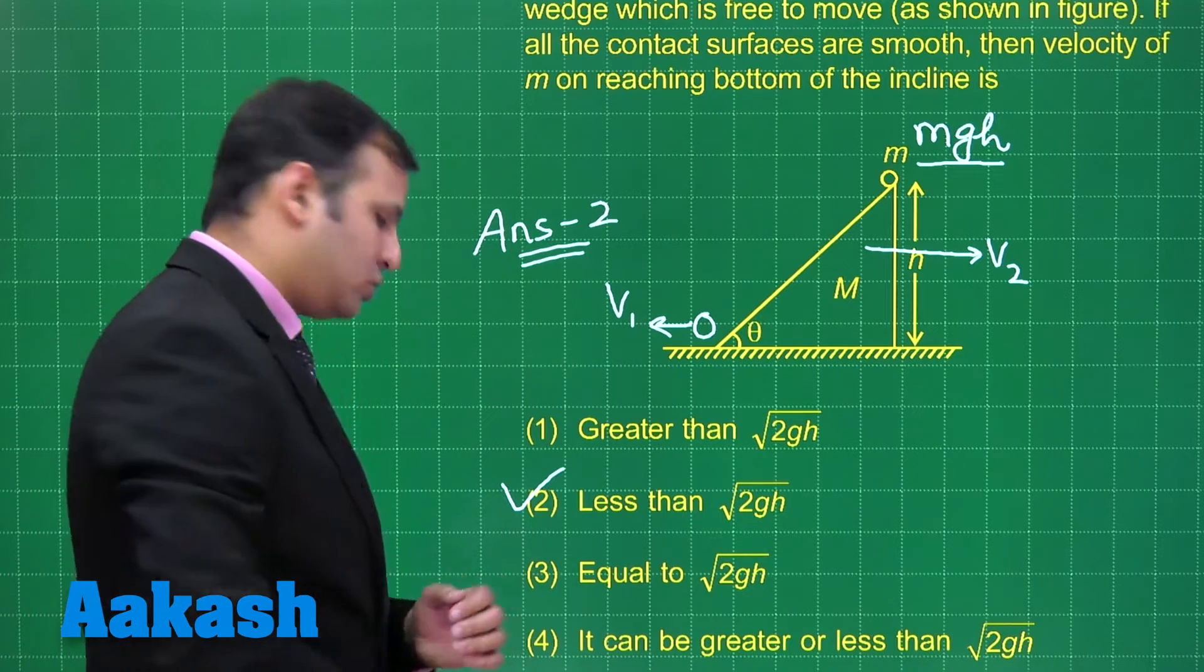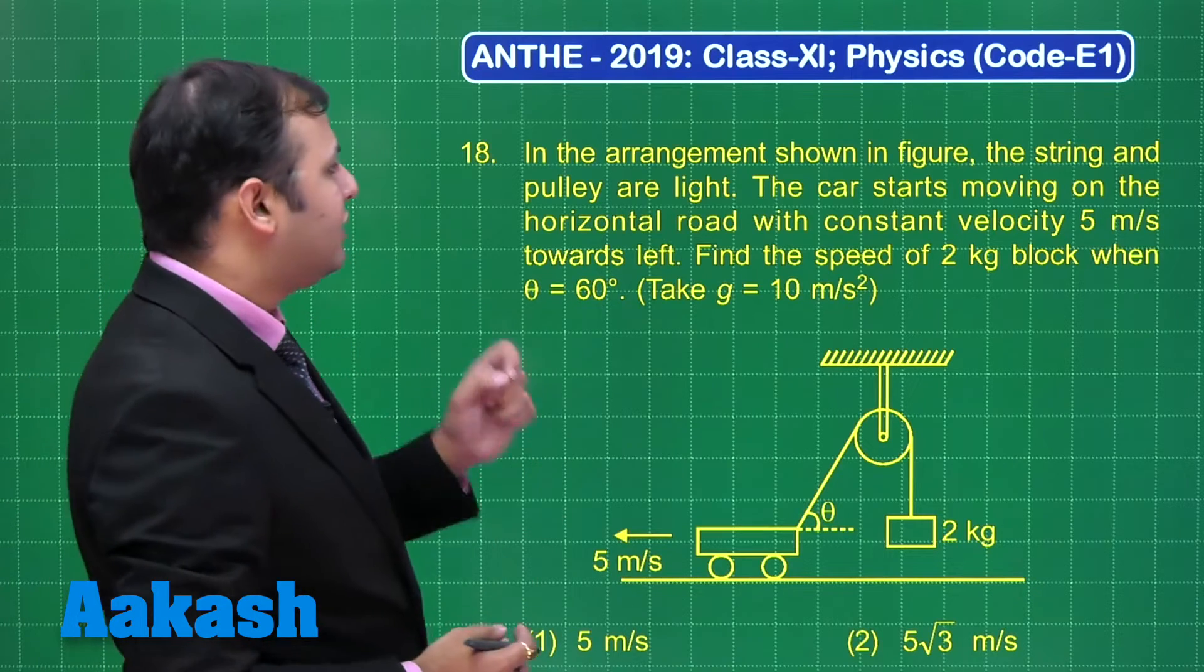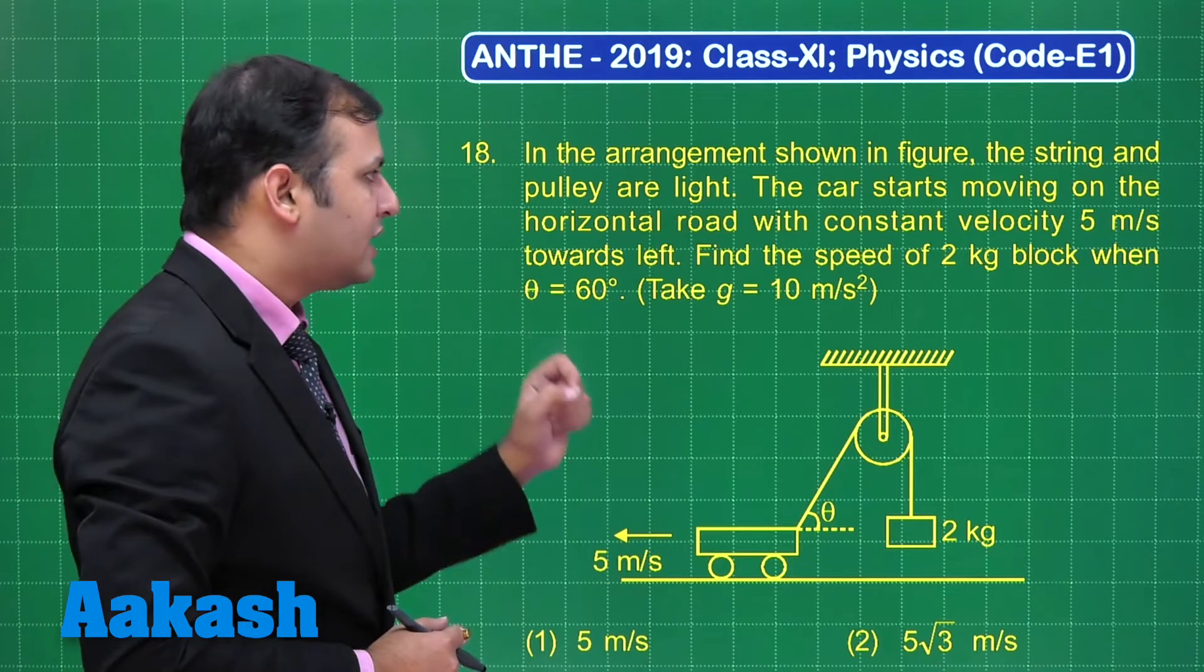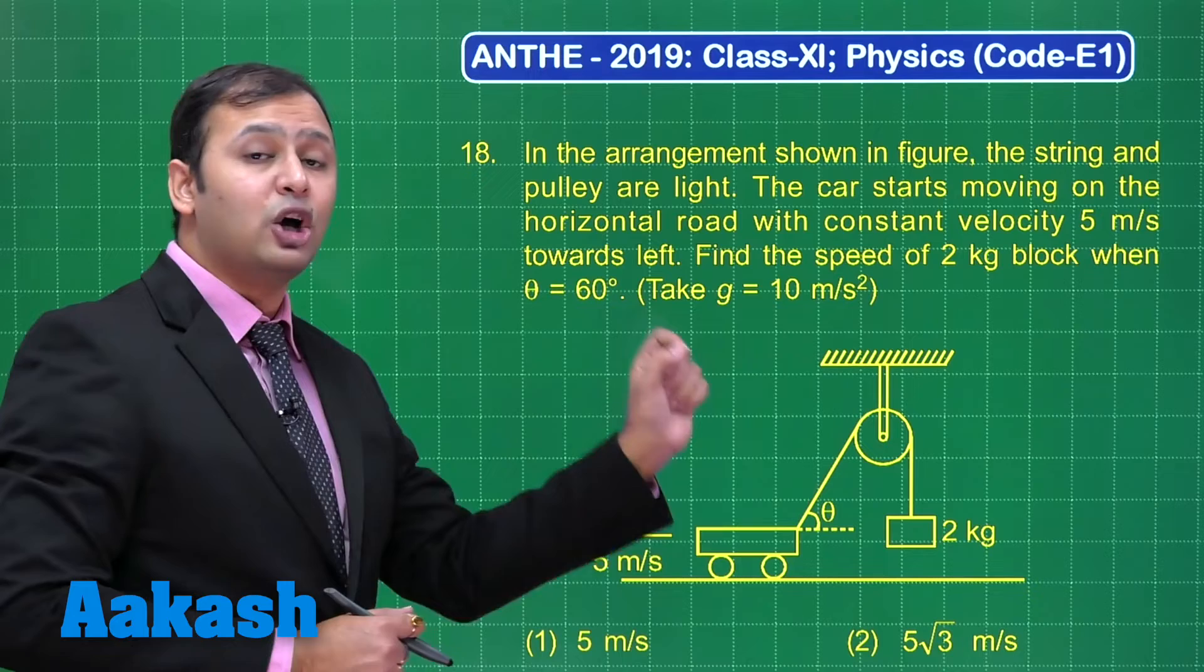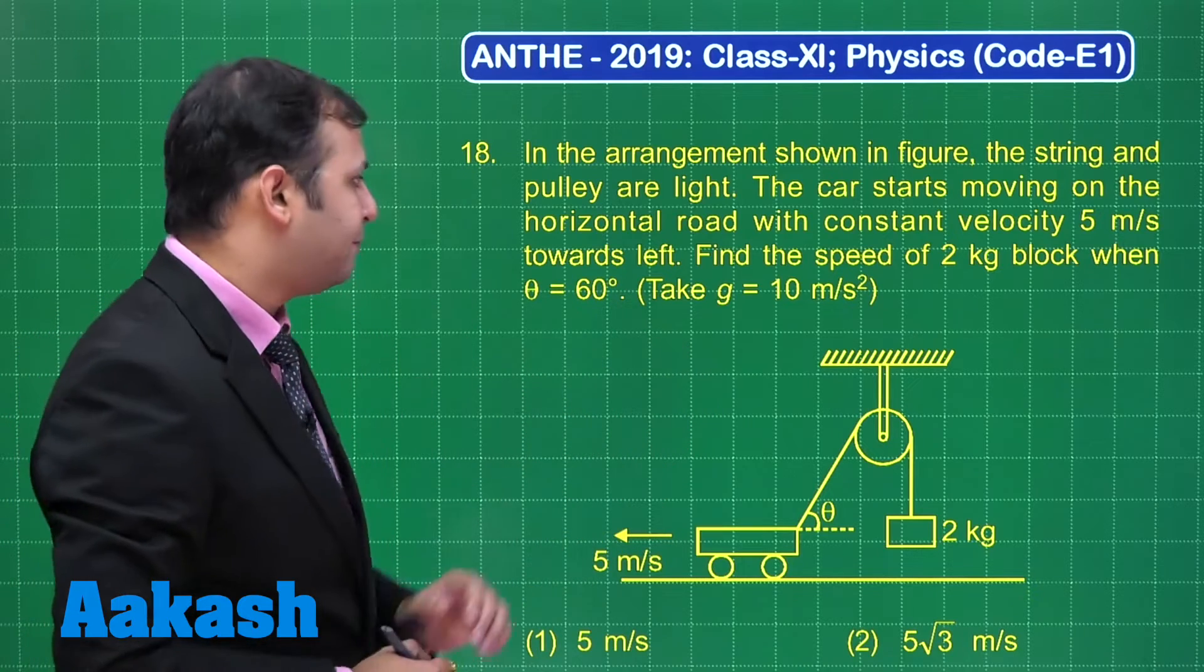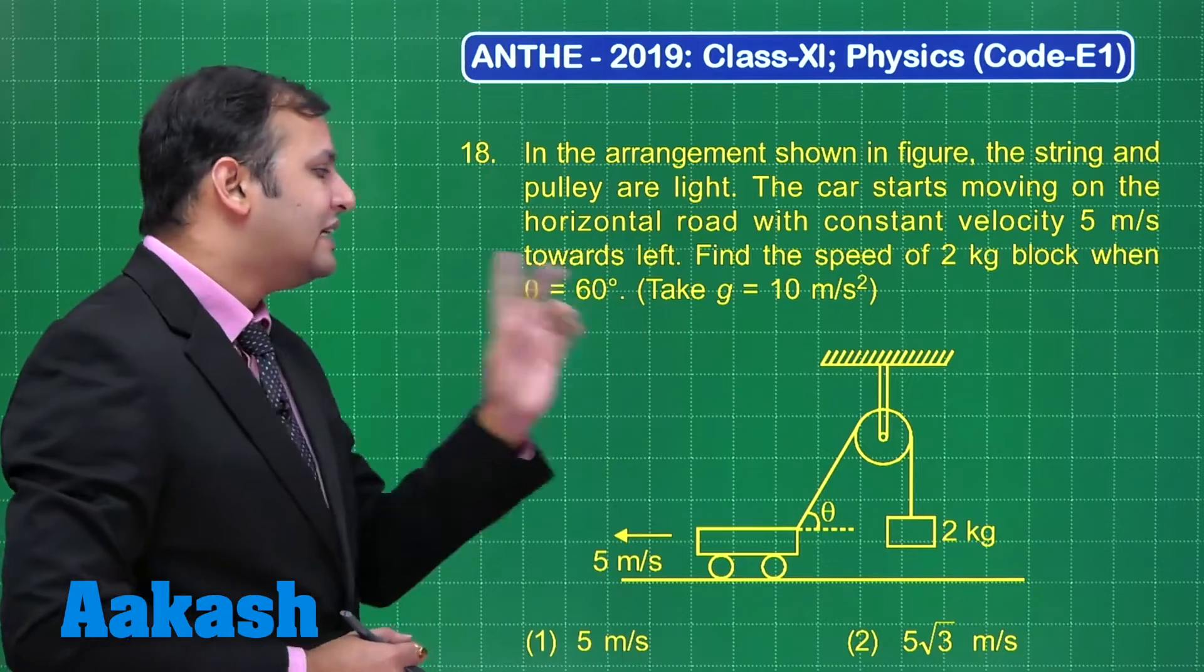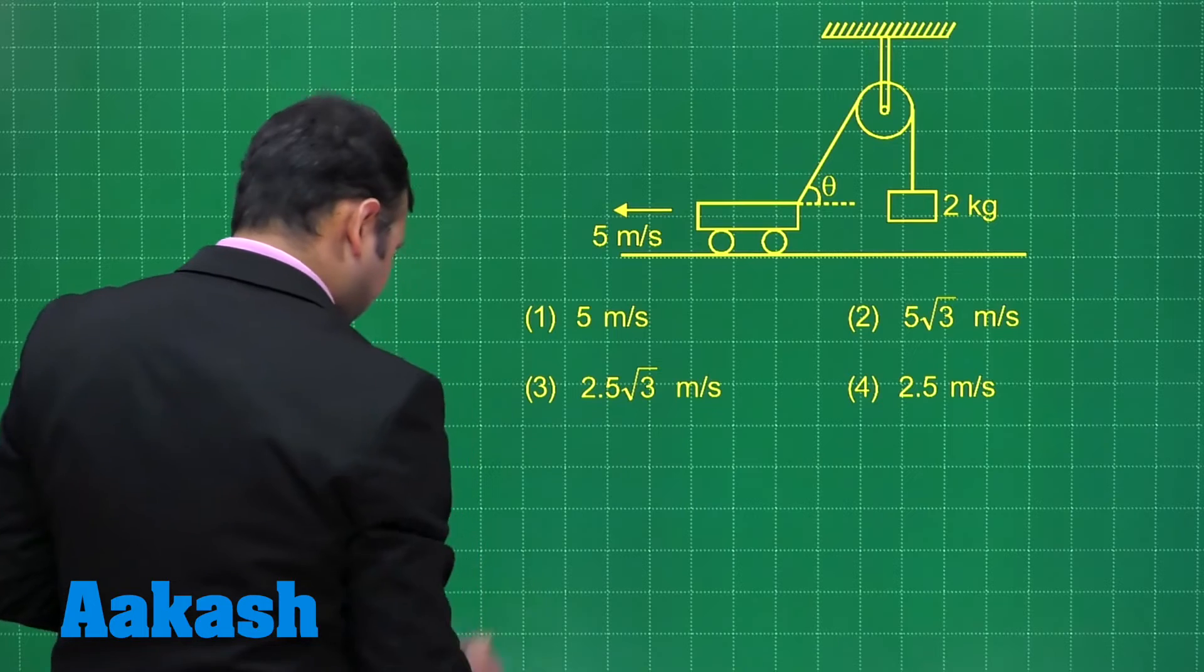Now let's move on to our next question, question number 18. In this given arrangement shown in the figure, the string and pulley are light. The car starts moving on the horizontal road with a constant velocity of 5 m/s. Find the speed of the 2 kg block when θ = 60°. This is a question of constraint motion concept.